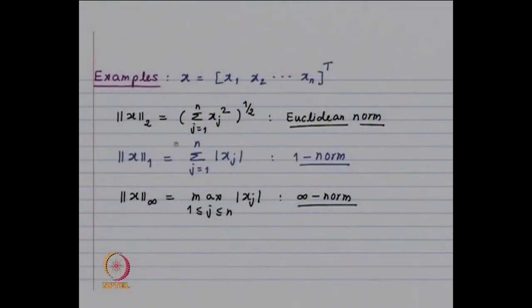Let us look at some examples of norms — you can define norm in various ways. We are going to consider three norms: one is the Euclidean norm, the second is known as the one-norm, and the third is the maximum norm or infinity norm. The reason we consider the one-norm and infinity norm will become clear when we look at the corresponding matrix norm.